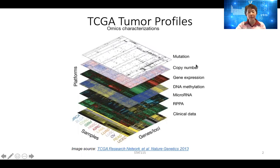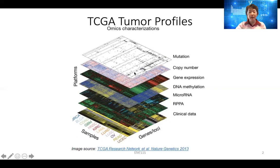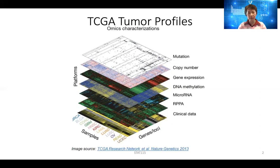From DNA sequencing you can look at copy number, but most copy number variation profiles are done using microarrays. In addition to that, they also did gene expression, DNA methylation, microRNA expression, and RPPA — a proteomics approach. They also have basic clinical annotations: patient age, gender, tumor stage, some treatment information, and survival data over at least five or six years.